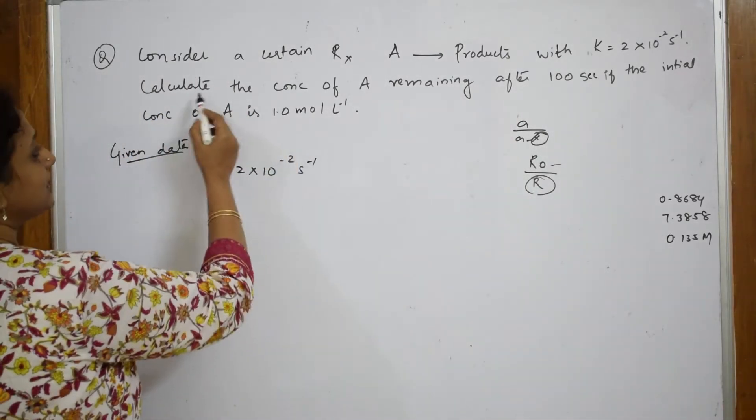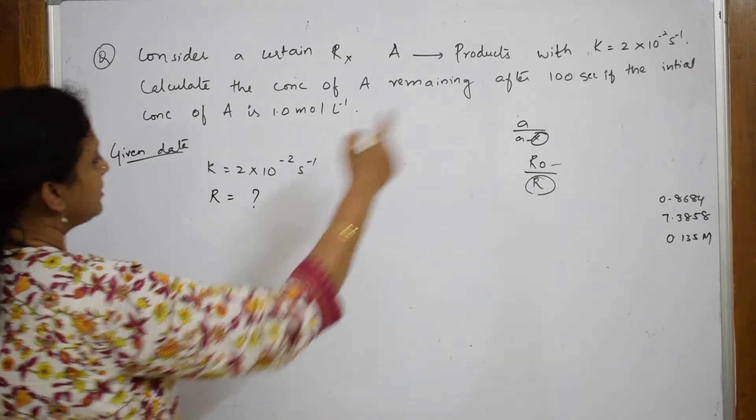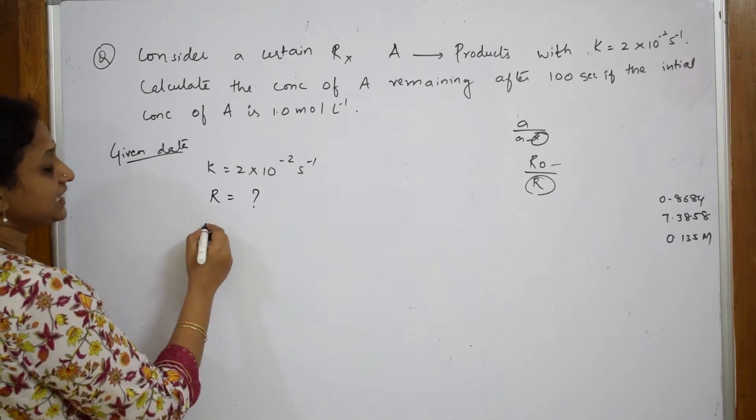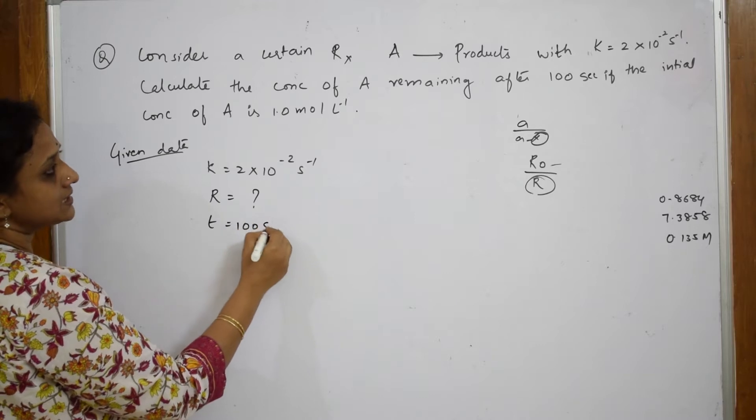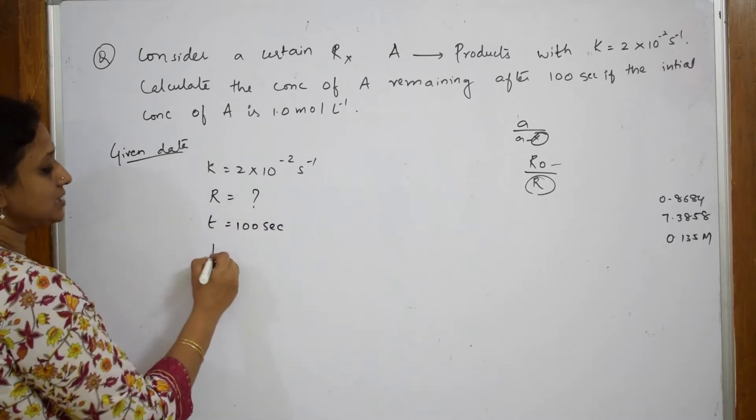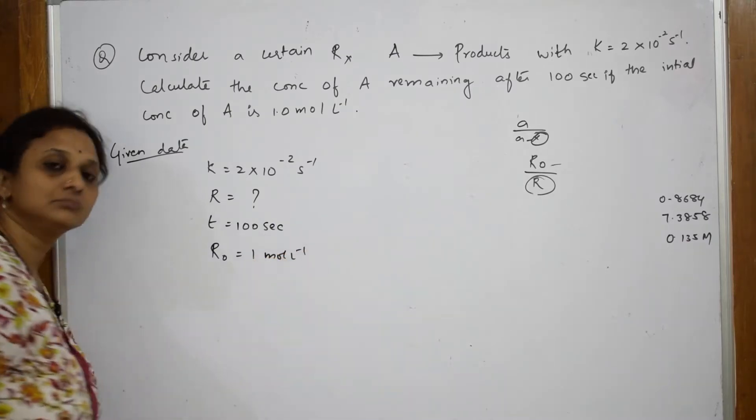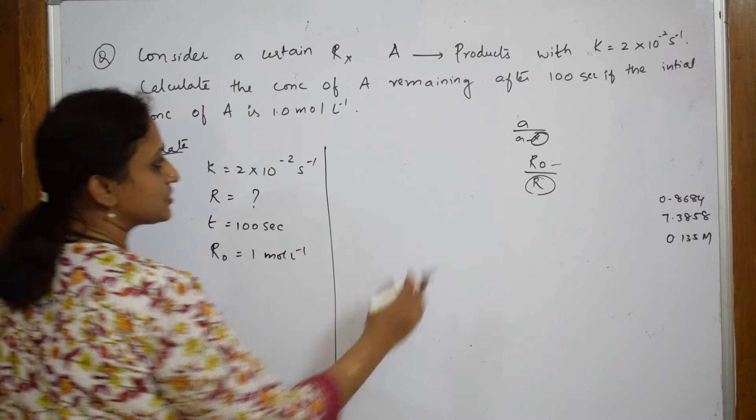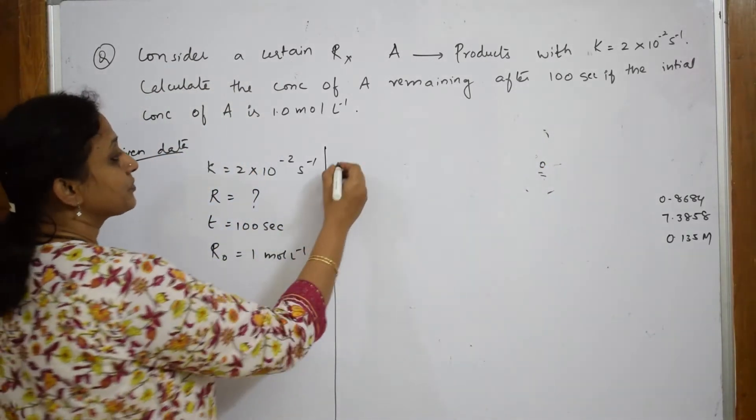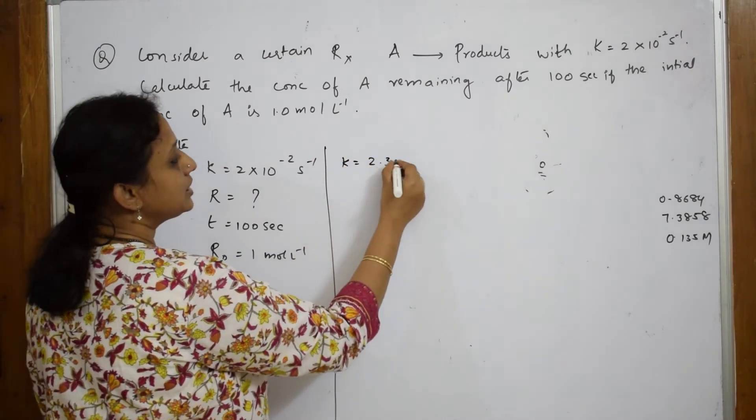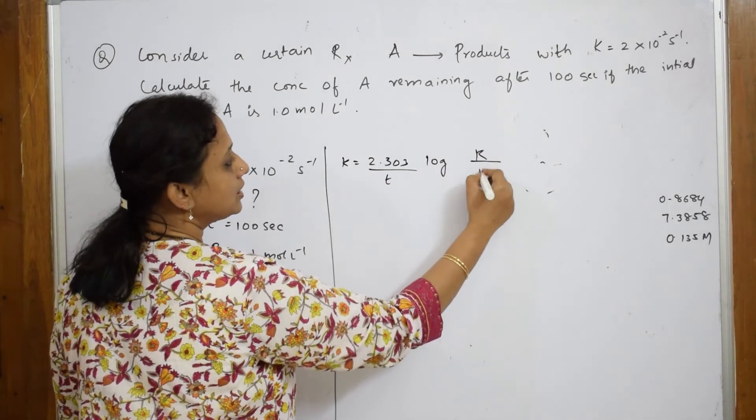Calculate the concentration of A remaining after 100 seconds. They have given me the reaction time is equal to 100 seconds. If the initial concentration of A that is R₀ is 1 mole liter inverse. Let us first write the formula for the first order.